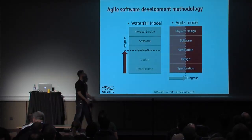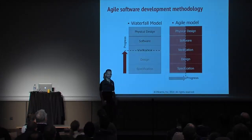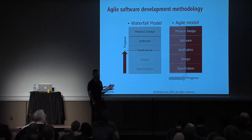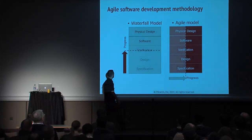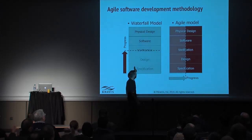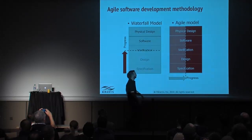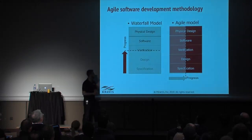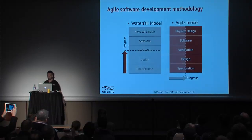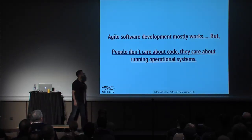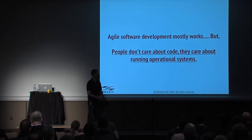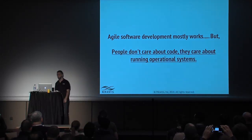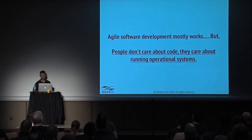We started with waterfall and realized that was horrible. A few years ago, some folks got together at Snowbird and threw together the Agile Manifesto. The point of the Agile Manifesto is we don't want linearly dependent progress — we want smooth progress. We want to iterate in very short sprints, get demos out, consume new user stories, keep a backlog. For the most part, it works for development. But it turns out people don't care about code — what they care about is running, working software. If at the end of the day we don't have software that's delivered and running, we have failed.